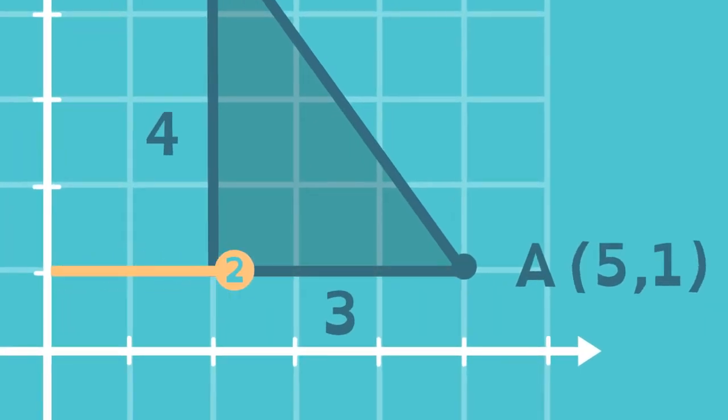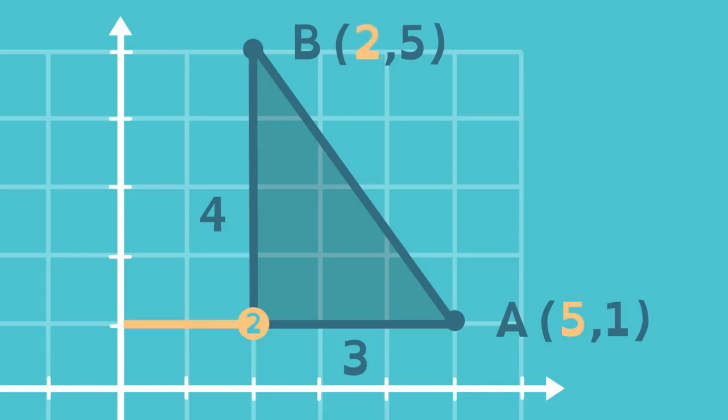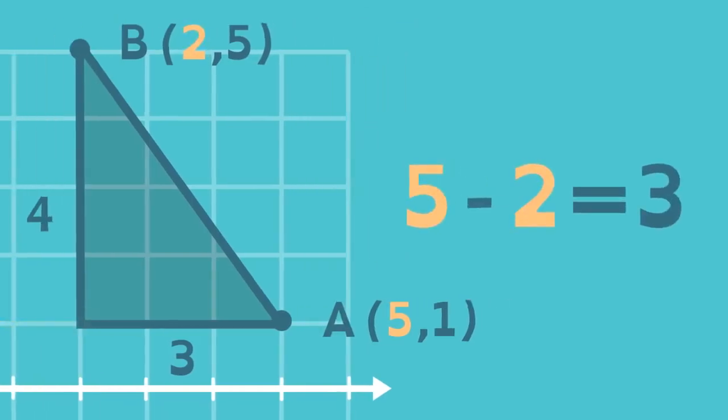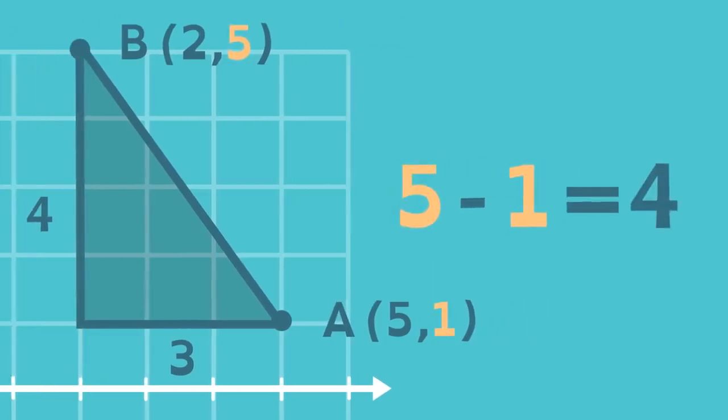For the horizontal leg, take the x-distance of A and subtract the x-distance of B. This is equivalent to subtracting the x-coordinates of A and B. For the vertical leg, take the y-distance of A and subtract the y-distance of B. This is equivalent to subtracting the y-coordinates of A and B.